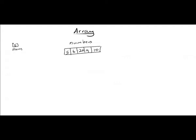Every location inside of the array has its own index, placed inside square brackets. An array can hold multiple values — more than one, as we have five values here. However, they must all be the same data type. So I can have an array of integers, an array of characters, an array of real numbers, etc., but everything in the array must be of the same data type.